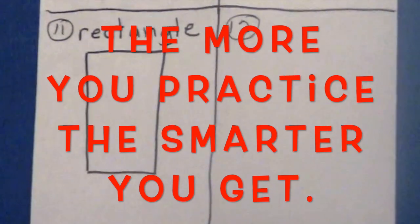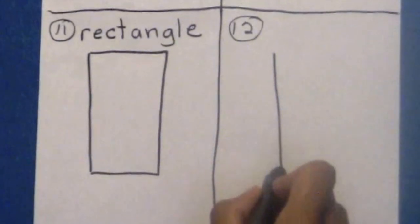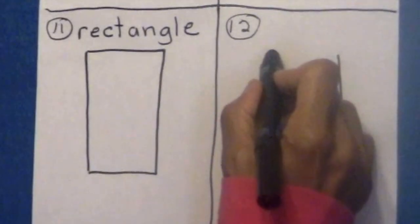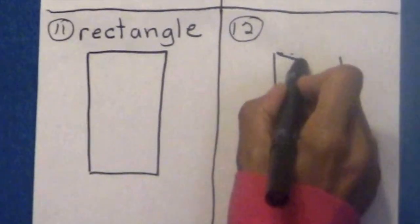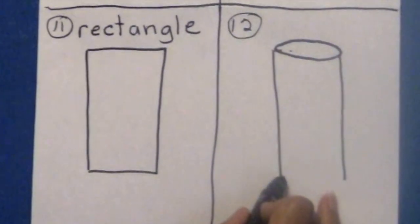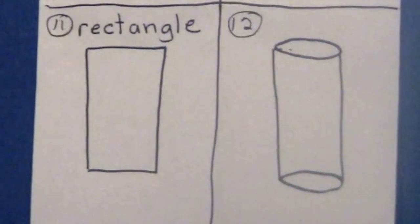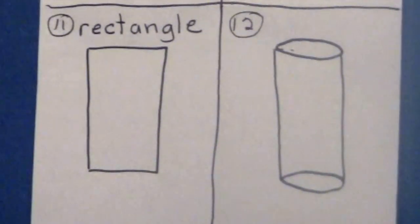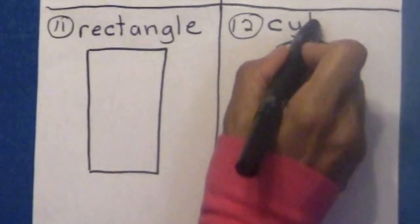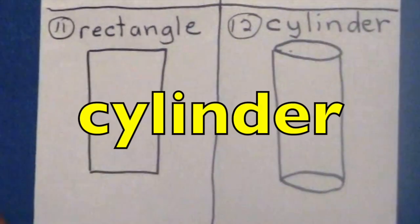So now I want you to draw a rectangle, kind of part of a rectangle over here. Instead of drawing the... We're going to, at the top, make kind of a circle on top. And down here, make a circle down here. What shape is this, boys and girls? What did you say? Yell it out! Cylinder! Yes! C-Y-L-I-N-D-E-R. Cylinder!